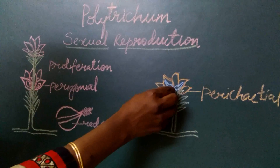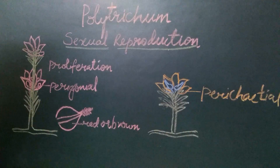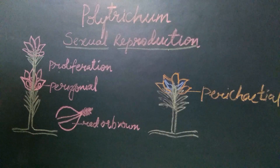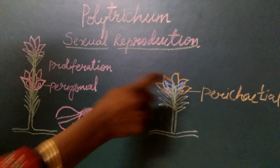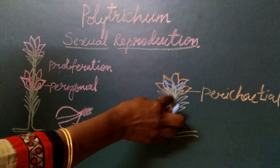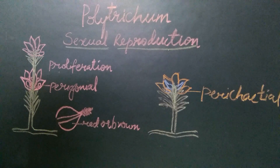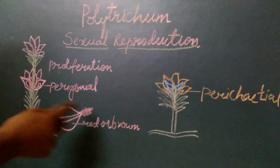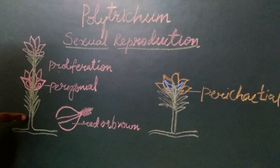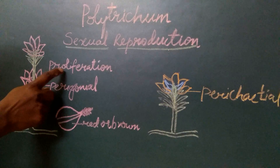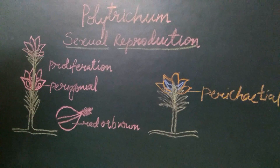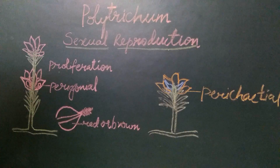In the formation of the archegonia, the apical bud of the plant is used up — that is, the apical bud also participates in the formation of the archegonia. Because the apical bud is used up, the female plant does not grow further after the formation of the female flower or moss flower. So we can very easily identify a male plant from a female plant, because in the male plant we see growth of the main stem even after the formation of the antheridia — this is called proliferation — whereas proliferation is not seen in the female plant.